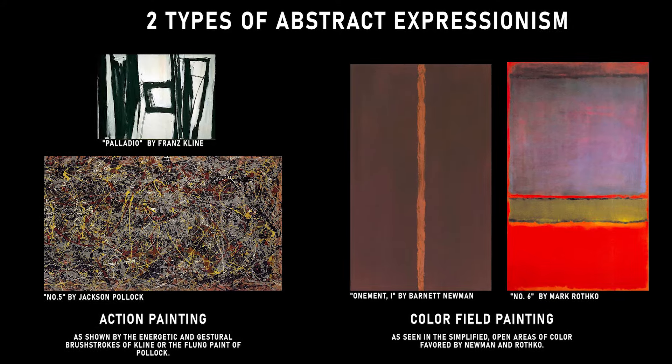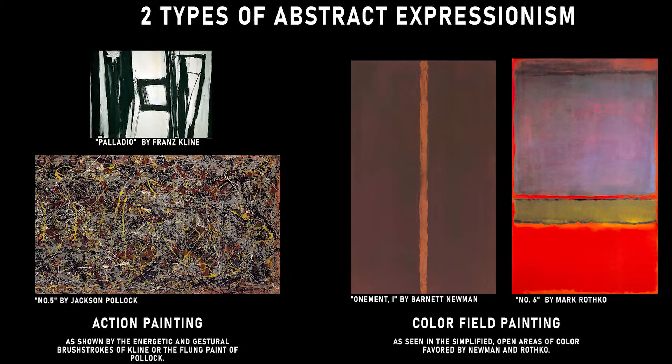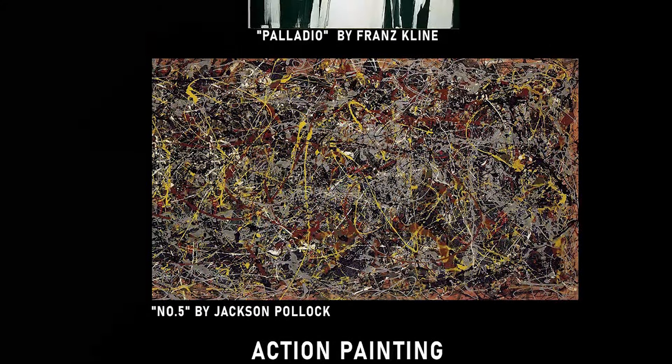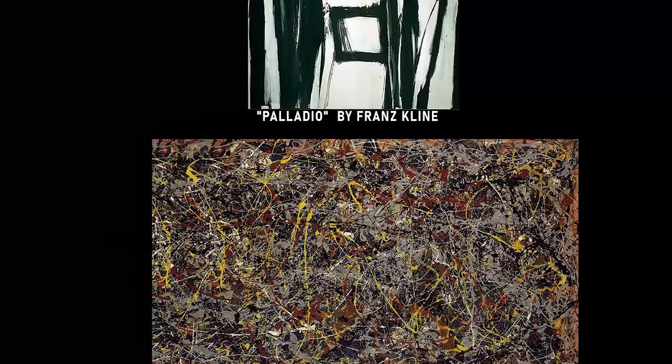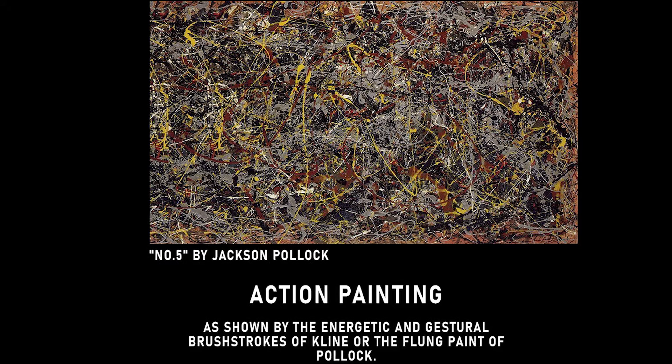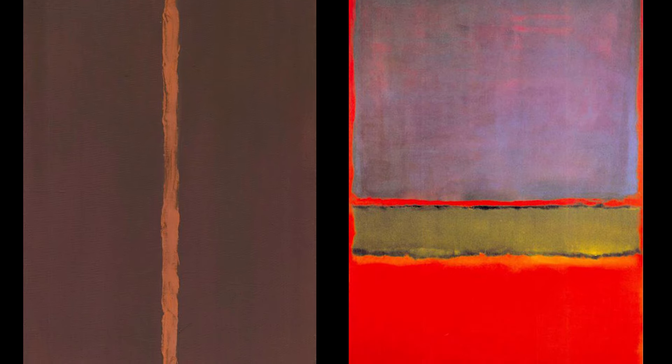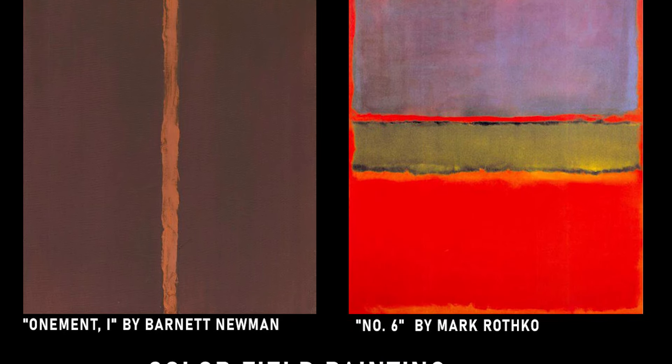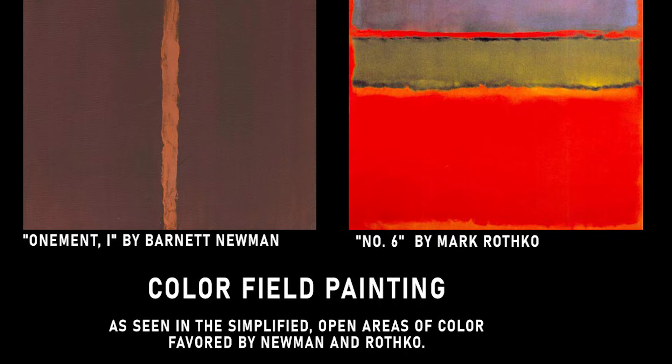Did you know that abstract expressionism actually has two main types? Most scholars identify two major stylistic tendencies within abstract expressionism. The first one is action painting, as shown by the energetic and gestural brushstrokes of Klein or the flung paint of Pollock. The other one is called color field painting, as seen in the simplified open areas of color favored by Newman and Rothko.